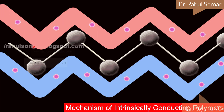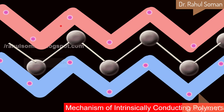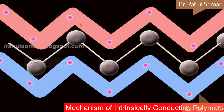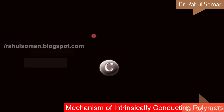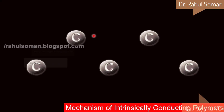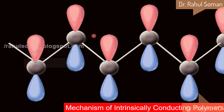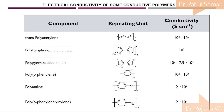If we add a dopant to polyacetylene — that is, impart a positive or negative charge to the polymer — the conductivity of this polymer will increase by 10,000 times. How that happens and what occurs during doping can be seen in detail. These are some examples of conductive polymers and their conductivity values.